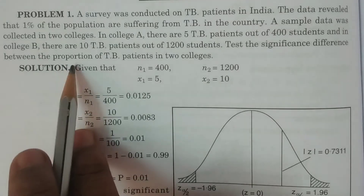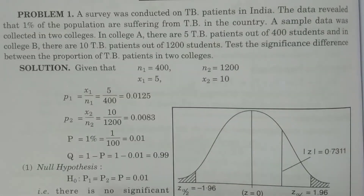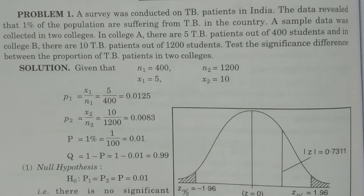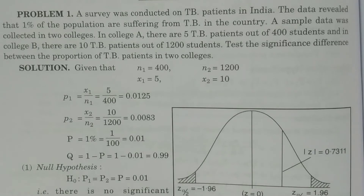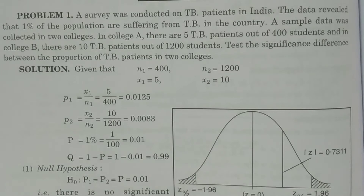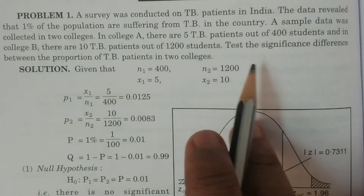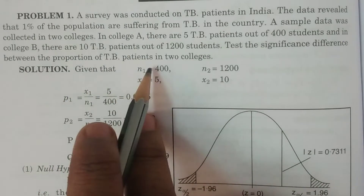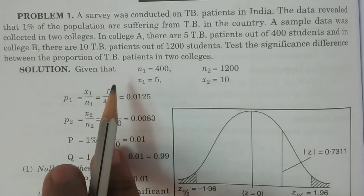The question asks us to test the significance difference between the proportion of TB patients in the two colleges. This is equivalent to testing whether two population proportions are equal — it concerns sample proportions. The question may be framed either way, between population proportions or between sample proportions.